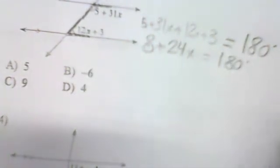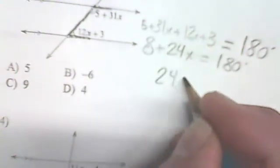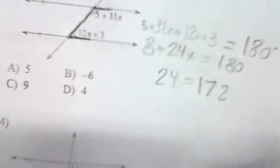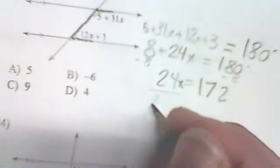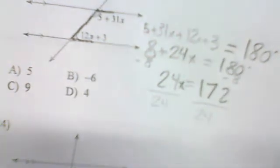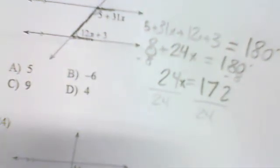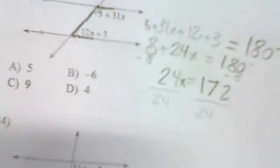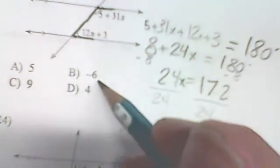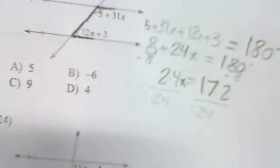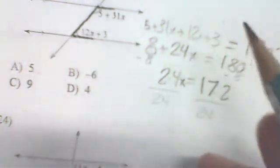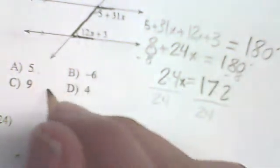Subtracting 8 from both sides gives 43x equals 172. Now divide both sides by 43. Checking the answer choices: 4 times 43 is not 172, negative 6 won't work, 5 times 43 is not 172. The answer has to be from the choices — let's verify by checking which multiple of 43 equals 172.